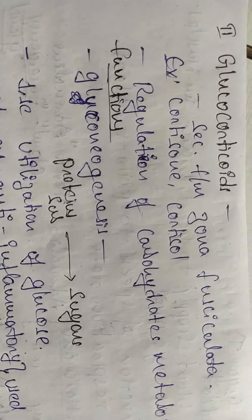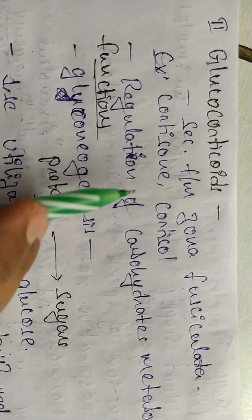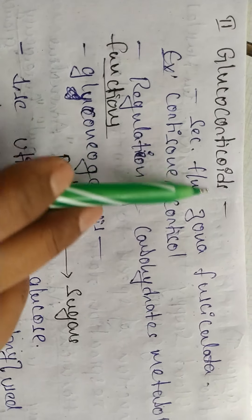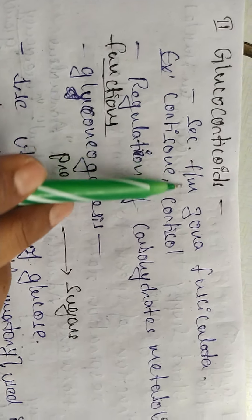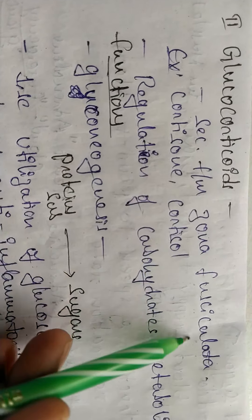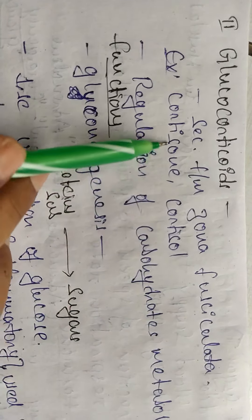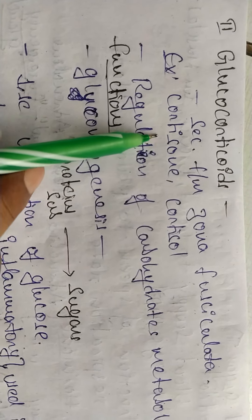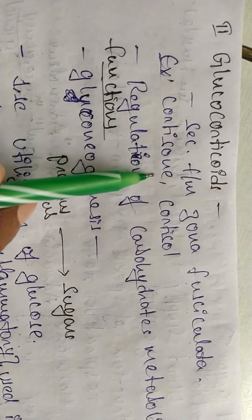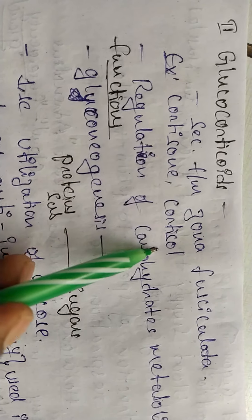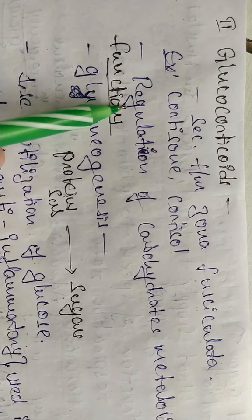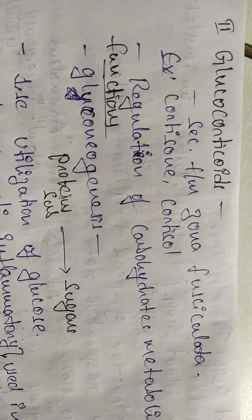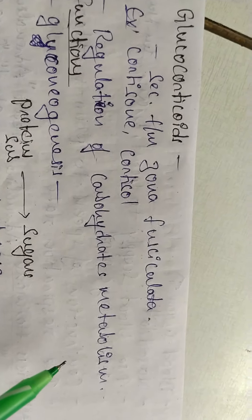The second group of hormones from the adrenal cortex is the glucocorticoids, secreted from zona fasciculata. Examples include cortisone. These hormones are mainly involved in the regulation of carbohydrate metabolism.